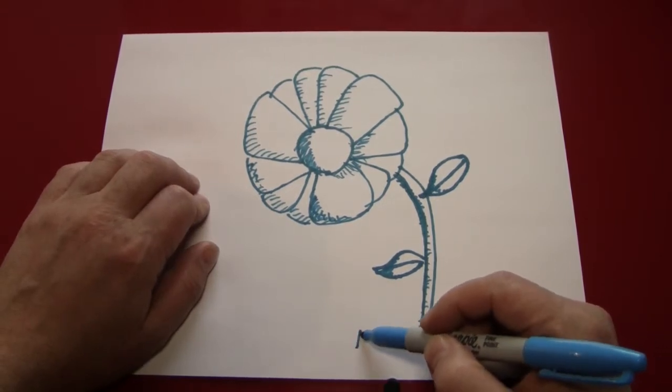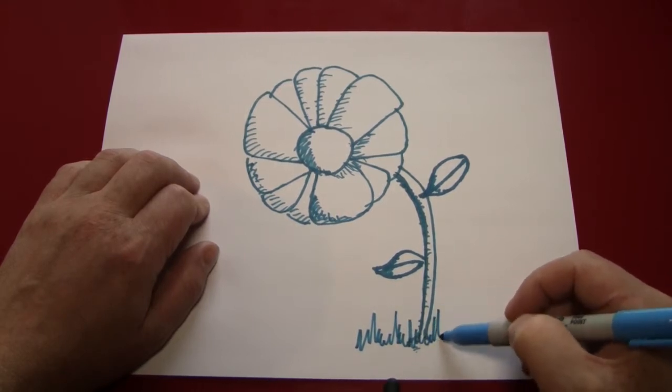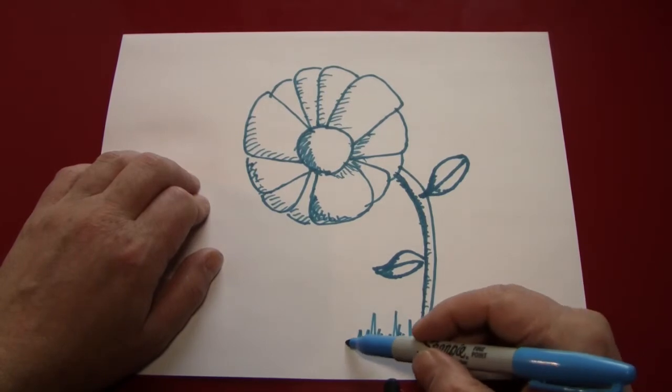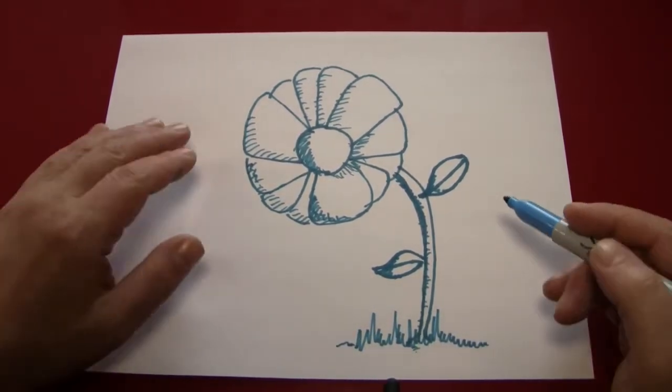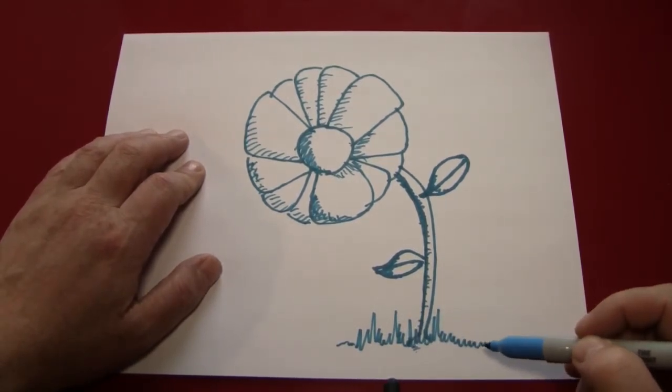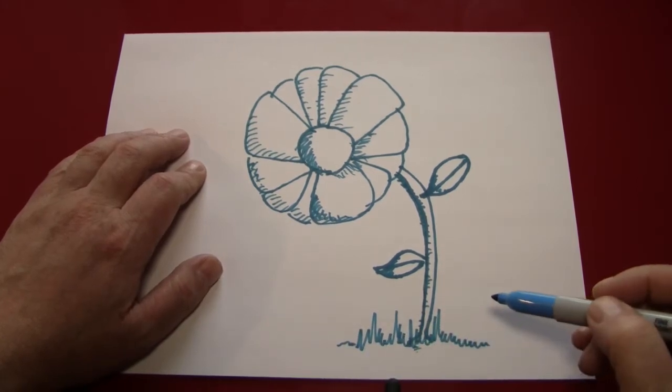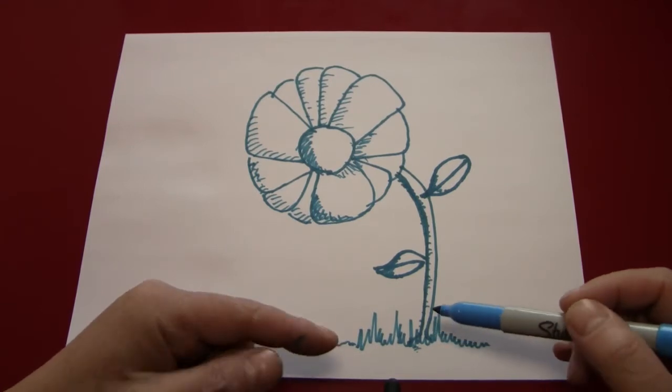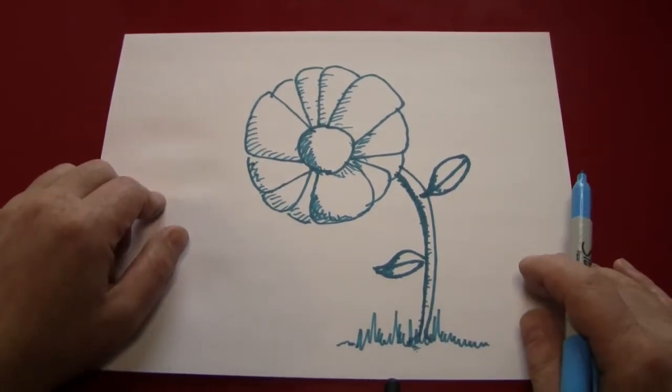And something I haven't been pointing out about drawing grass at the base of things is it's nice to make it a little higher in the middle and then a little bit lower on the ends. And that gives the impression of depth because the part closest to the picture looks like it's closest to you because that's where the most detail is.